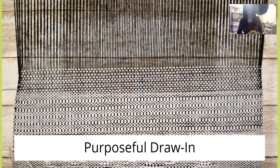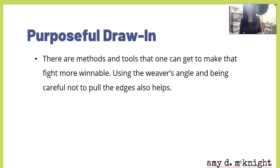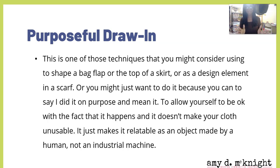Purposeful draw-in — that's what's happening over here and over here. Draw-in is when the edges of the fabric are pulled too tight and begin to concave. This happens because there is not enough weft thread in the pick to interlace over the warp threads in a balanced way. It is a fact of weaving that we're generally trying our best to fight against. There are methods and tools to make that fight more winnable, such as using a weaver's angle and being careful not to pull the edges.